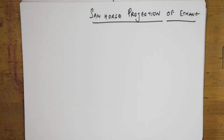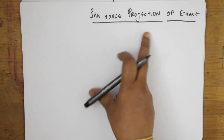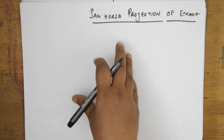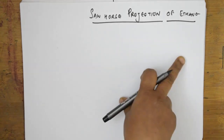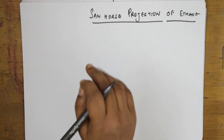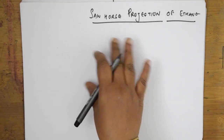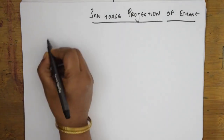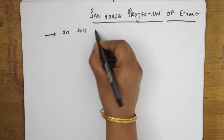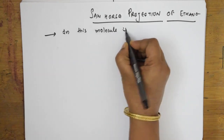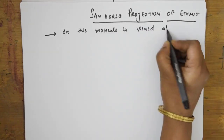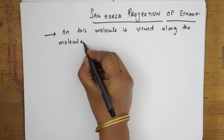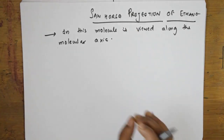Please watch the previous video for connectivity. In sawhorse projection of ethane, the molecule is viewed along the molecular axis. You have to remember that the molecule is viewed along this molecular axis, and I'll be drawing that.